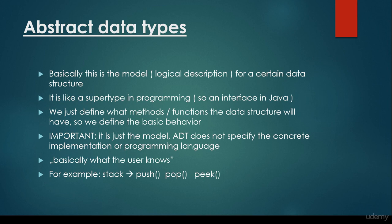The abstract data type doesn't specify the concrete implementation or the programming language. Basically, this is what the user knows. For example, we have the stack. We know that we would like to have three methods: the push method, the pop method, and the peek method. The push is going to add an item to the data structure. The pop is going to return and retrieve an item from the data structure. And the peek is going to return an item without removing it from the data structure.